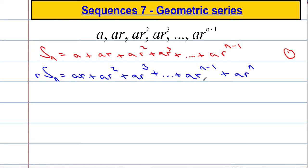You might be wondering where this has come from. If you consider, before this term we have AR to the n minus 2. When I multiply that by R, we get AR to the n minus 1, and then this term here, multiplied by R, gives me AR to the n. Just in case you're wondering what's going on there. I'm going to call this equation 2.